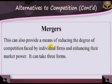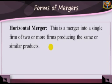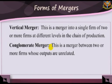Mergers can also provide a means of reducing competition faced by individual firms and enhancing their market power. Mergers can take three forms. A. Horizontal merger: a merger into a single firm of two or more firms producing the same or similar product. B. Vertical merger: a merger into a single firm of two or more firms at different levels in the chain of production. C. Conglomerate merger: a merger between two or more firms whose outputs are unrelated.